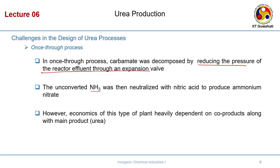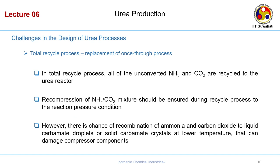The issue with the once-through process is not the process itself but the economics: the plant becomes heavily dependent on by-products rather than the main product. That is what limits the once-through process. The alternative is the recycle type or stripping process.